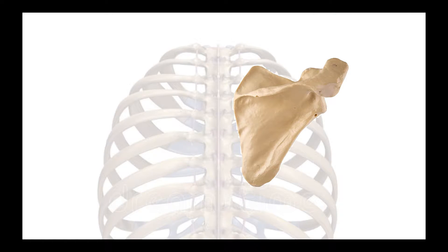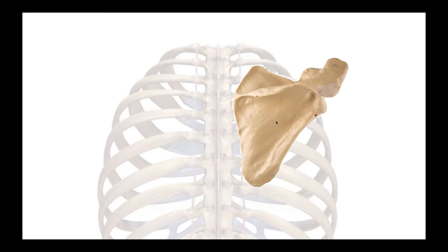With the left scapula removed, you can see how the right scapula sits on the back of the ribcage in this posterior view. These are the vertebrae with spinous processes visible at the midline, and these are the ribs. When the scapula moves, it glides over the ribs — it can glide up, glide down, abduct away from the midline (also called protraction), adduct back to the midline (also called retraction), and it can also undergo rotational movements.